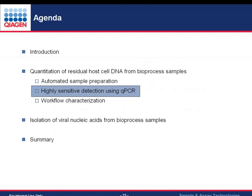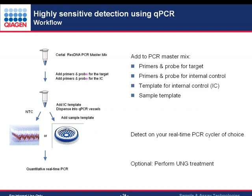Moving to the quantitative PCR assay, the workflow is very typical: primers and probes target CHO or viral cell lines, and an internal control is included in the assay to detect any PCR inhibition. There is a specification for the internal control verifying the absence of DNA inhibition in the sample. Once the master mix is prepared, it is run on your cycler of choice — a plate cycler or our Rotor-Gene cycler — with protocols provided for a broad range of typical PCR cyclers.